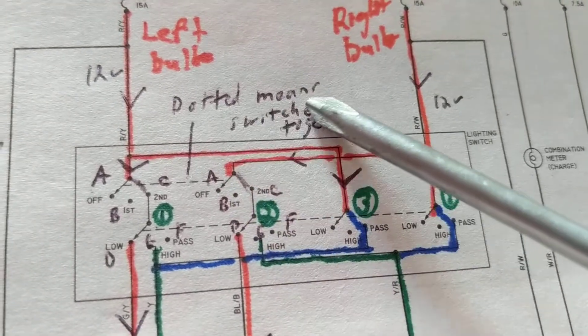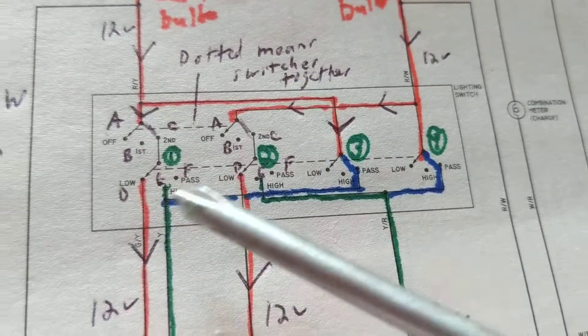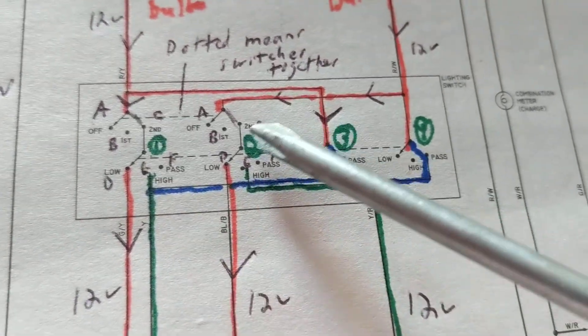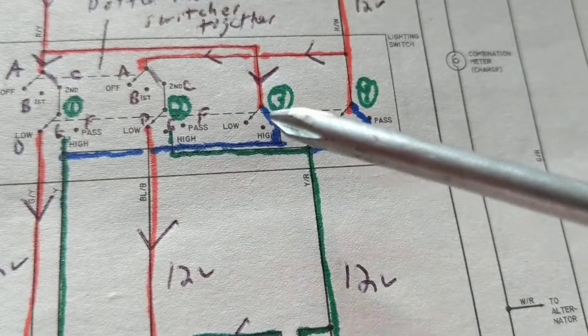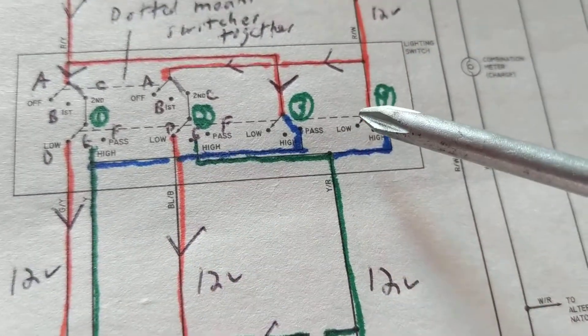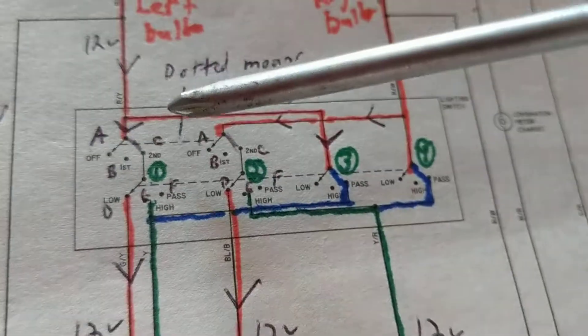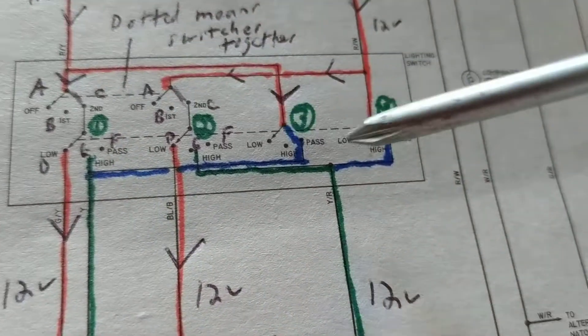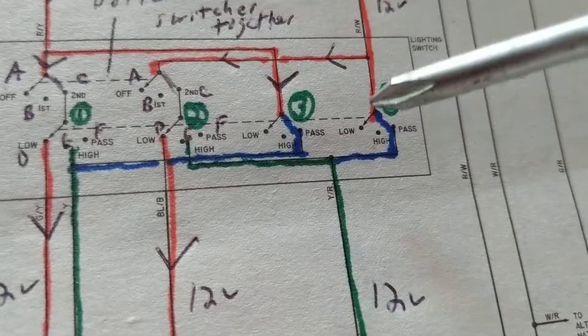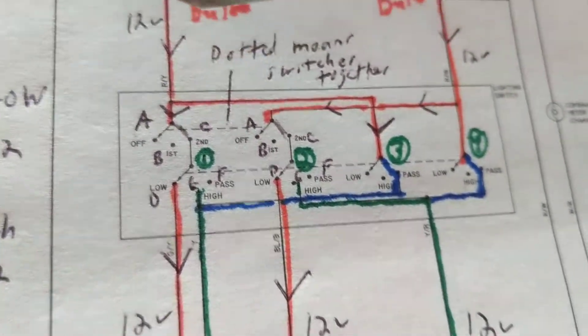You see these dotted lines? Dotted means switches together. That means these are all ganged together. When I move this one, I move this one, and then I move this one simultaneously. It's like Siamese twins. I numbered switch one, switch two, switch three, and switch four. You'll see later why I had to do that.